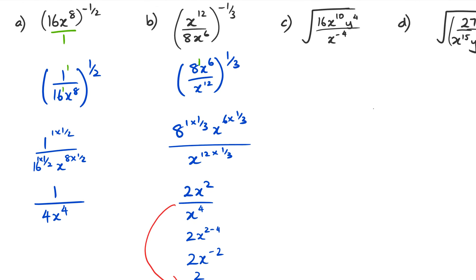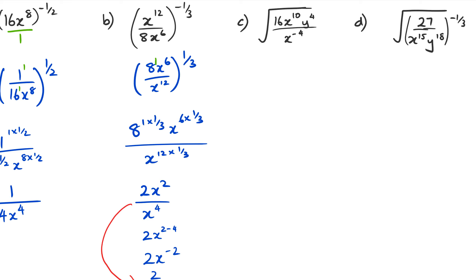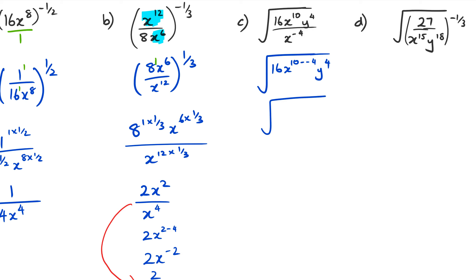Let's go to question C. What we have is a square root symbol with this entire fraction inside it. In some cases you can actually work whatever's inside the square root first — even in question B, you could have simplified x to the power of 12 and x to the power of 6 before getting started. That's what I'm going to do here. I'm going to leave the square root symbol as it is, but bring x to the power of negative 4 to the numerator. So it becomes x to the power of 10 minus negative 4, and then y to the power of 4. This simplifies to 16, x to the power of 14, and y to the power of 4.